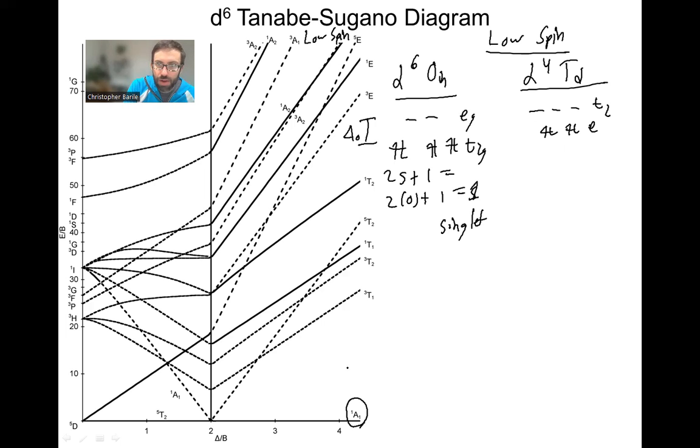So our ground state for octahedral is going to be singlet A1G. Our ground state for tetrahedral is going to be, for D4 tetrahedral, singlet A1. Remember, drop the Gs. There's no inversion.